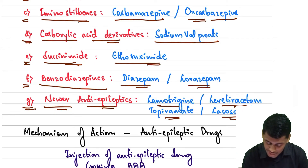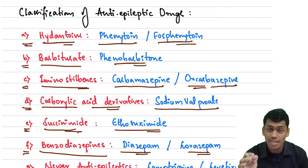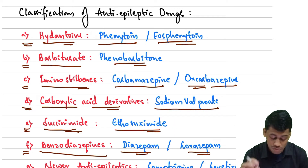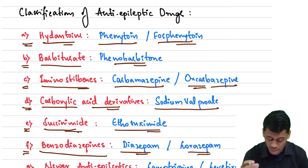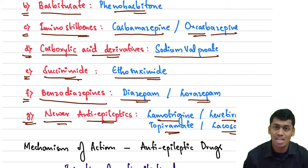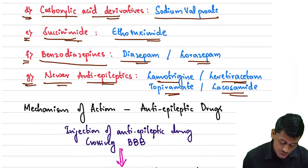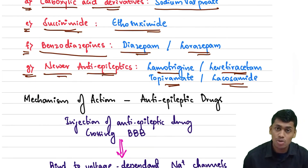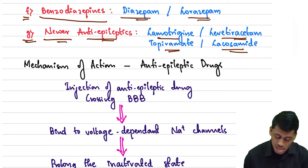To recap the classification — hydantoins: phenytoin and fosphenytoin; barbiturates: phenobarbitone; iminostilbenes: carbamazepine and oxcarbazepine; carboxylic acid derivatives: sodium valproate (also called valproic acid); succinimides: ethosuximide; benzodiazepines: diazepam and lorazepam; newer anti-epileptics: lamotrigine, levetiracetam, topiramate, and lacosamide. This classification is very important for examinations.